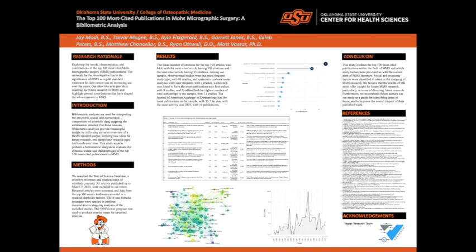Bibliometric analyses are used for interpreting the structural, social, and economical components of scientific data, mapping the information entailed. For these reasons, bibliometric analyses provide meaningful insight by collecting an entire overview of the field's research output, deriving new ideas for future research, as well as identifying research gaps and trends over time. Therefore, this study aims to perform a bibliometric analysis to evaluate the dynamic trends and characteristics found within the top 100 most cited publications in Mohs micrographic surgery.